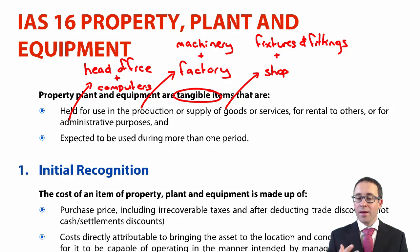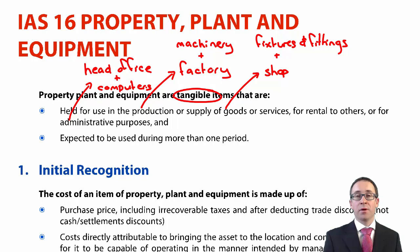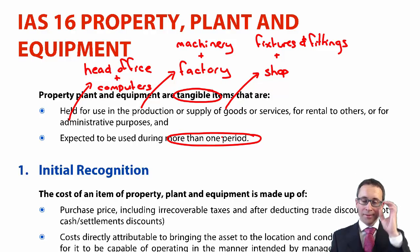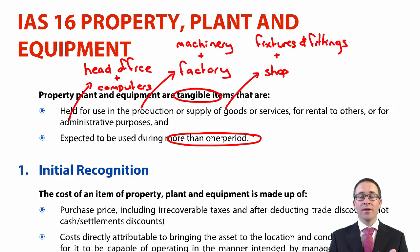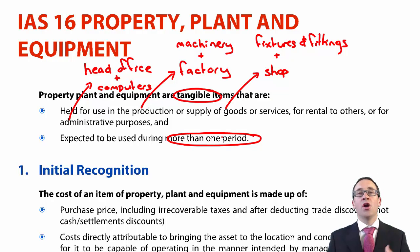PPE also covers assets under construction. If you are constructing an asset to be property, plant and equipment, you still follow the rules of IAS 16. For it to be PPE, it also needs to be non-current — so we're looking at using it for more than one period. A lot of this will be revision from your certificate level.